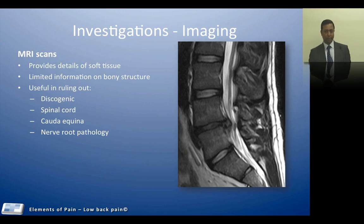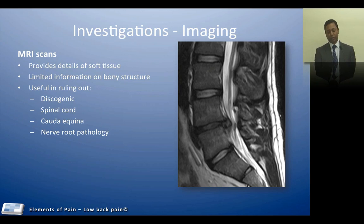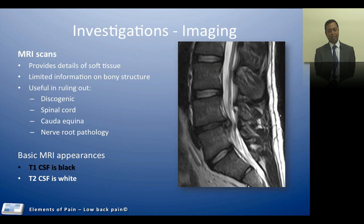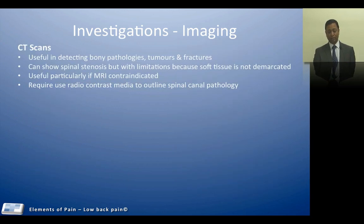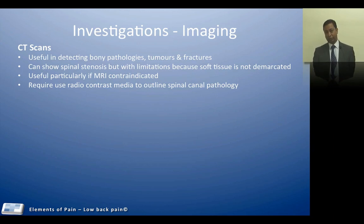MRI scans are much better and provide higher detail regarding soft tissue — they outline the disc, spinal cord, and can be used to rule out cauda equina and nerve root pathology. A brief reminder: on T1 images the CSF is black, and on T2 it is white. CT scans are useful in detecting bony pathology — tumours and fractures are very well demonstrated — and looking at the bony outline can help rule out neural compromise. There are limitations with spinal canal stenosis because soft tissue cannot be clearly identified on CT. CT is useful if an MRI is contraindicated.